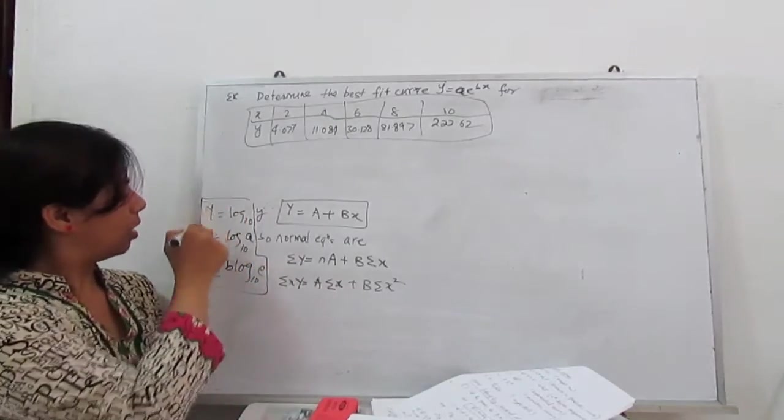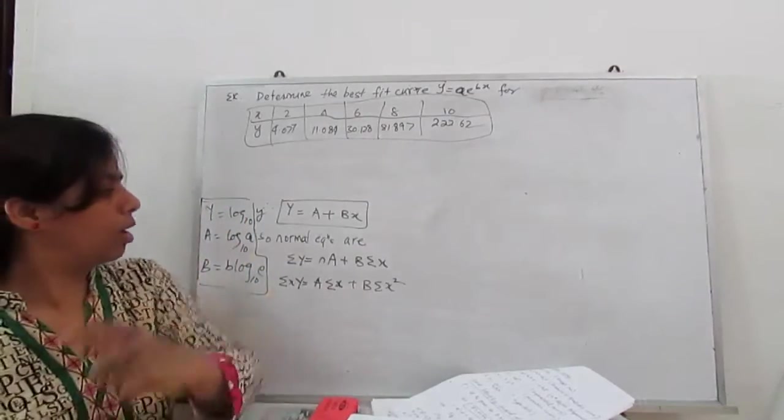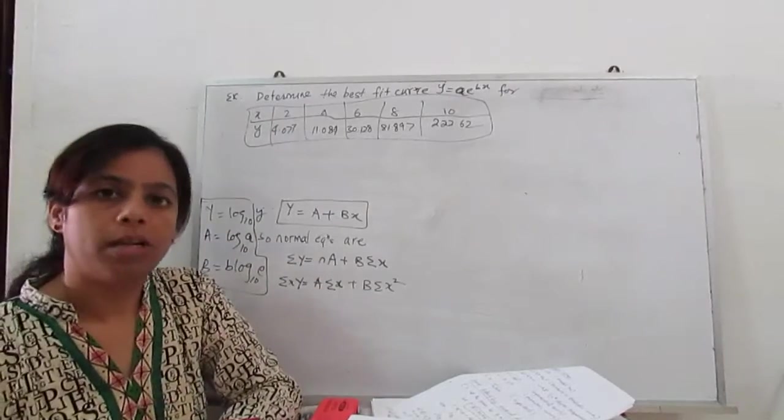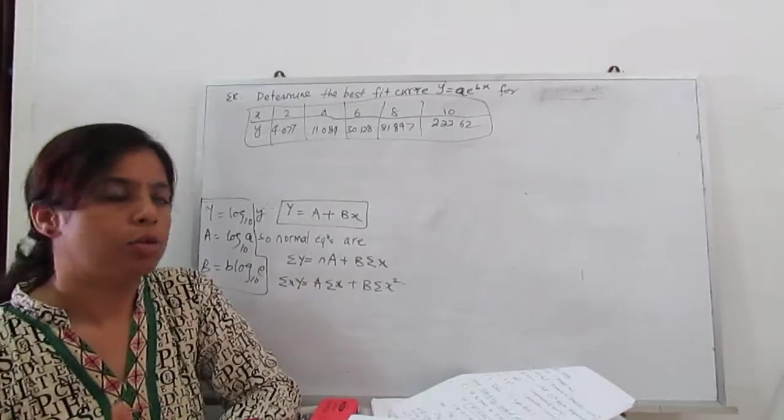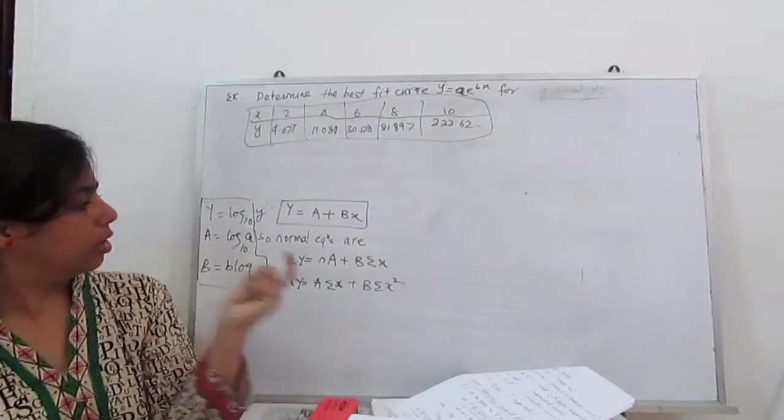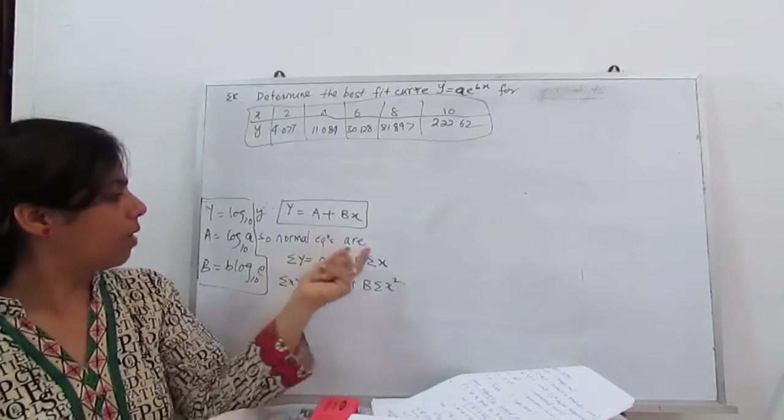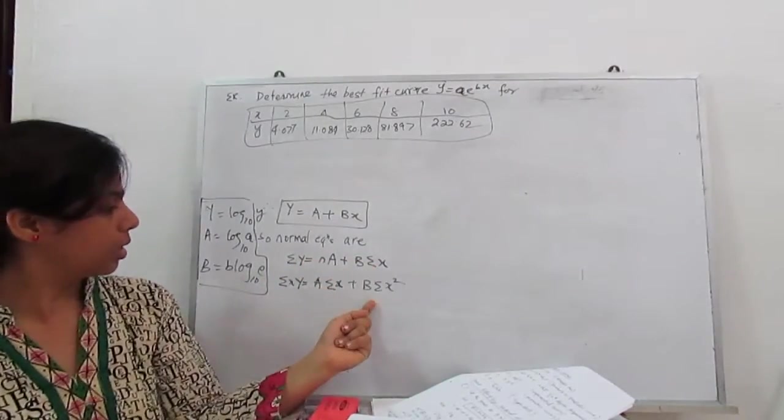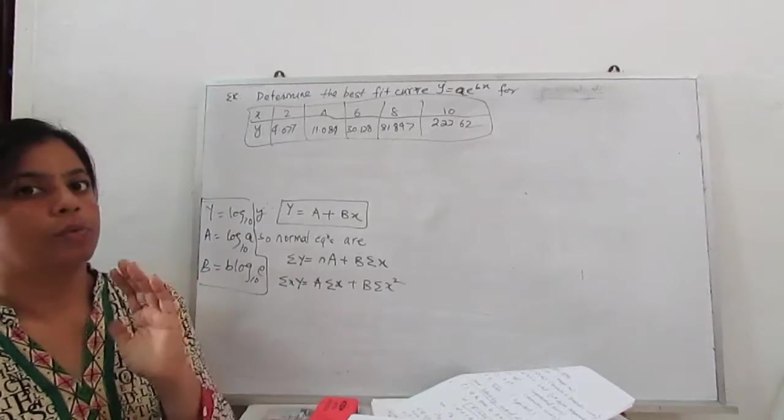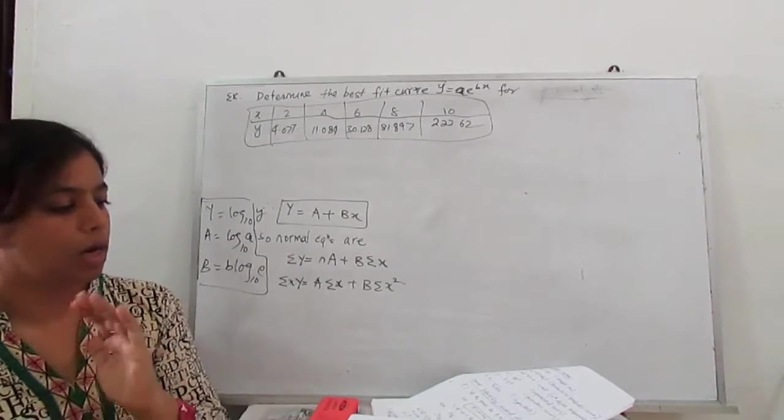So these are the constants which we have to derive with the normal equation and later we have to take the antilog. So for this normal equation we need summation Y, summation x, summation x square, summation xY. So we have to first construct the table.